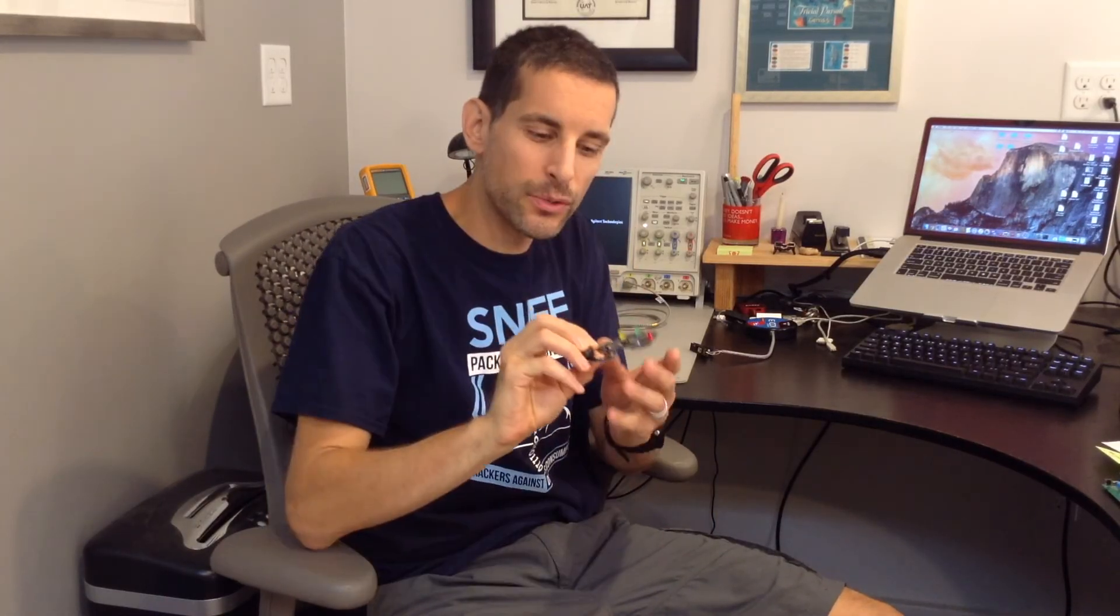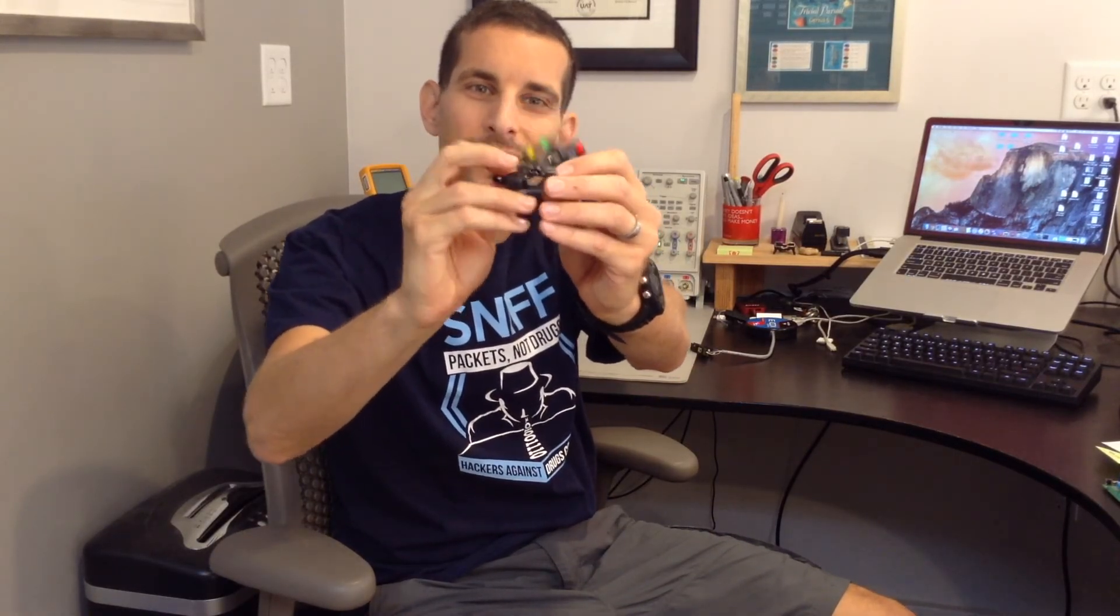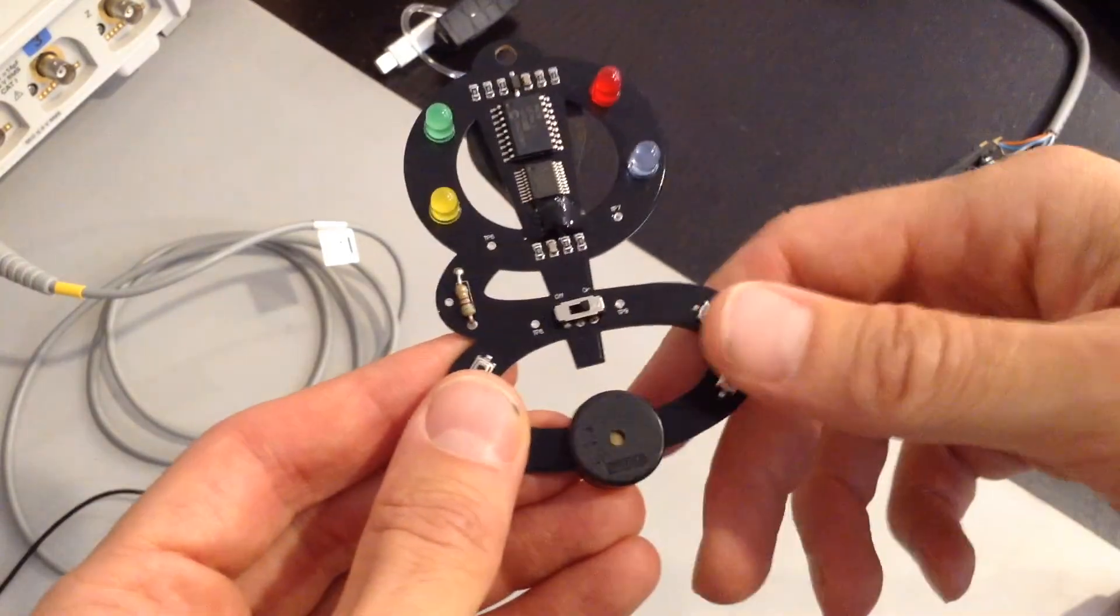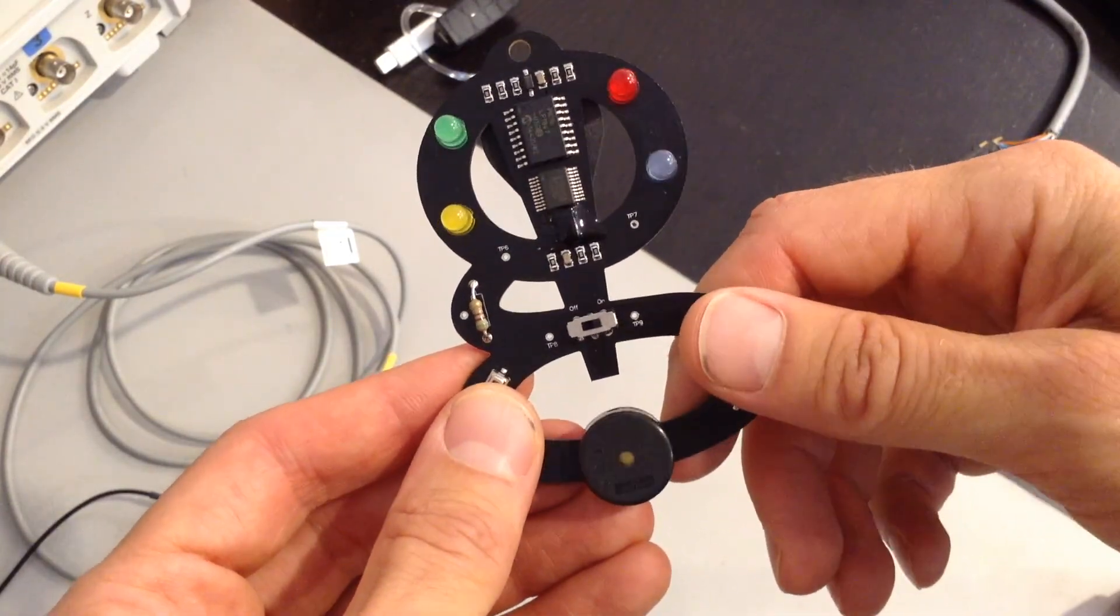The board we're going to use for our demonstration today is this little G-shaped circuit board. This is what I use in my hardware hacking training classes. This particular board has some security mechanisms built into it. I'm not going to give away any secrets, but there is one mode that you can enter that I call the pin entry mode.